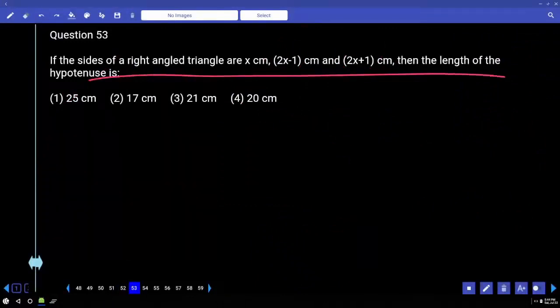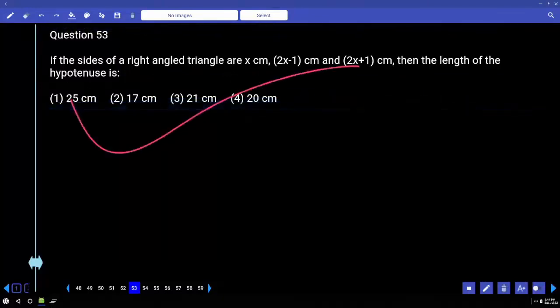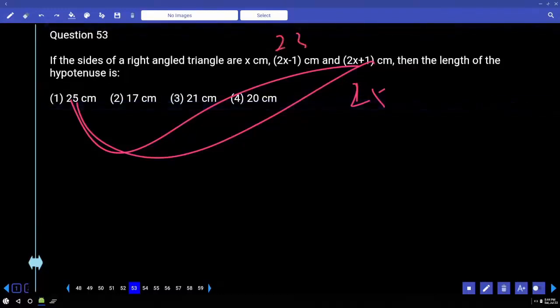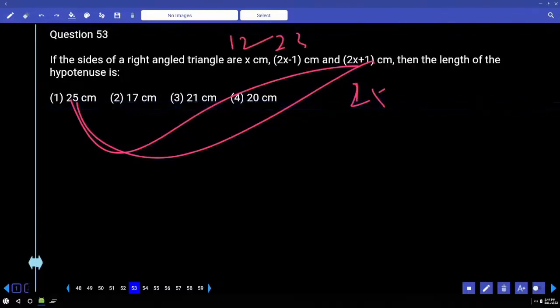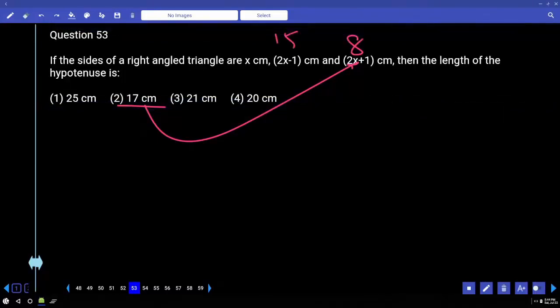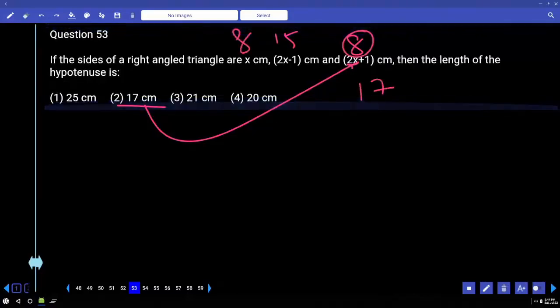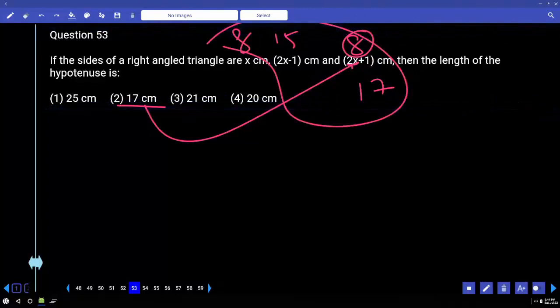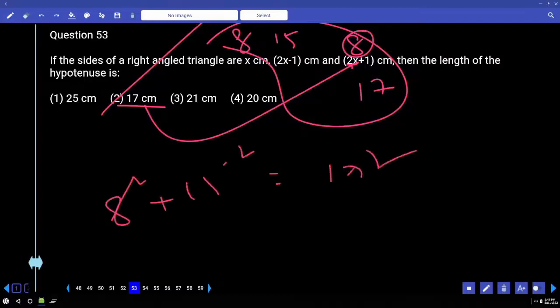If sides of the right triangle are x, 2x minus 1, 2x plus 1, then the length of the hypotenuse is. The hypotenuse will be 2x plus 1. Long exercise will be the hypotenuse. If 2x plus 1 is 25 then x is 12. So this will be 23, this will be 12. 12, 23, 25 combination. Right angle triangle. 17, for example, if it is 17, x should be 8. If it is 17, this will be 15. If it is 17, this will be 17, and this will be 8. 8, 15, 17 combination. Right angle triangle 8, 15, 17 combination. 8 square plus 15 square is equal to 17 square. So option 2 is the correct answer.